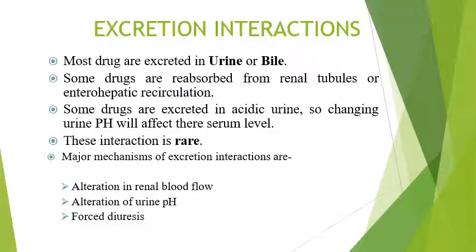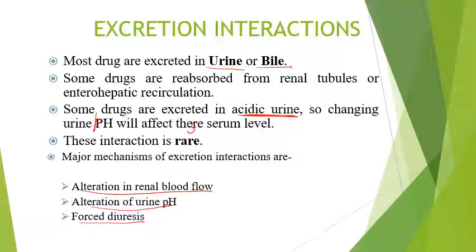Now we will talk about excretion interactions briefly. Most drugs are excreted in urine or bile. Some drugs are reabsorbed from renal tubules or enterohepatic recirculation. Some drugs are excreted in acidic urine, so changing the urine pH will affect their serum levels. These interactions are rare and occur by alteration in renal blood flow, alteration of urine pH, or forced diuresis.